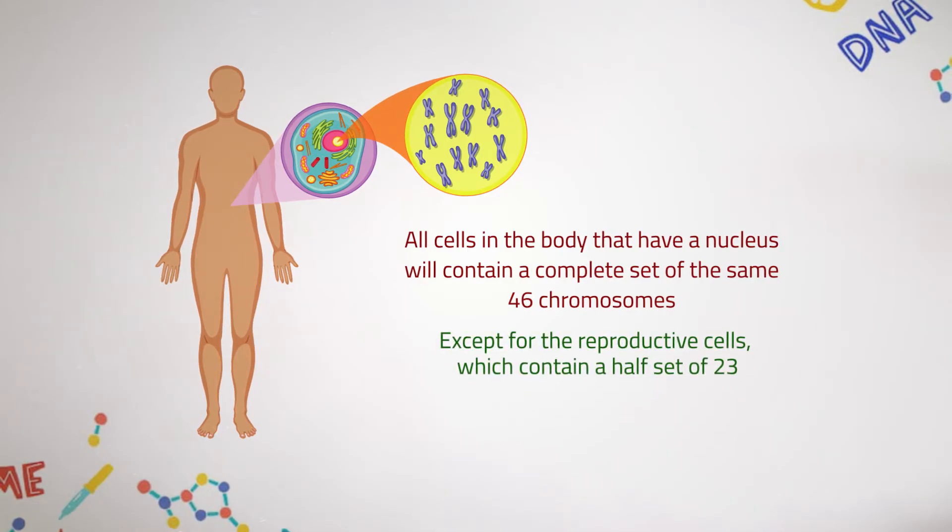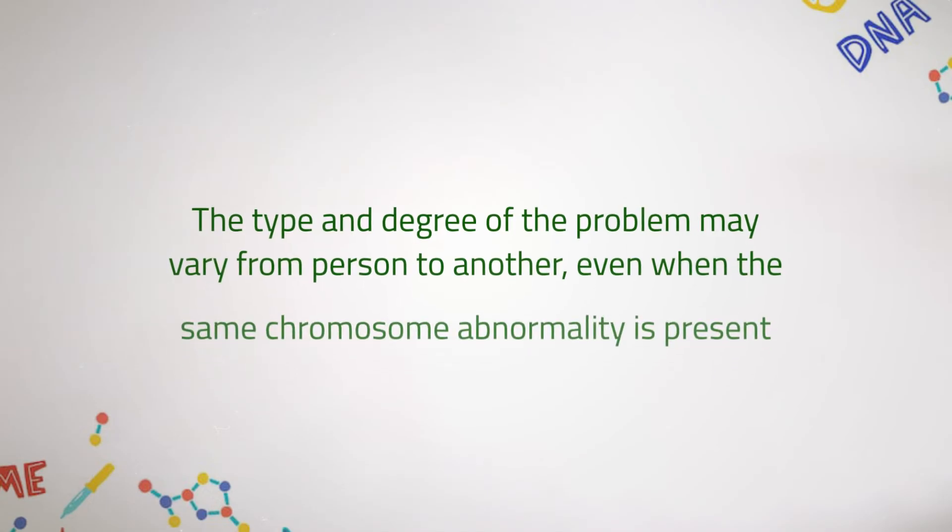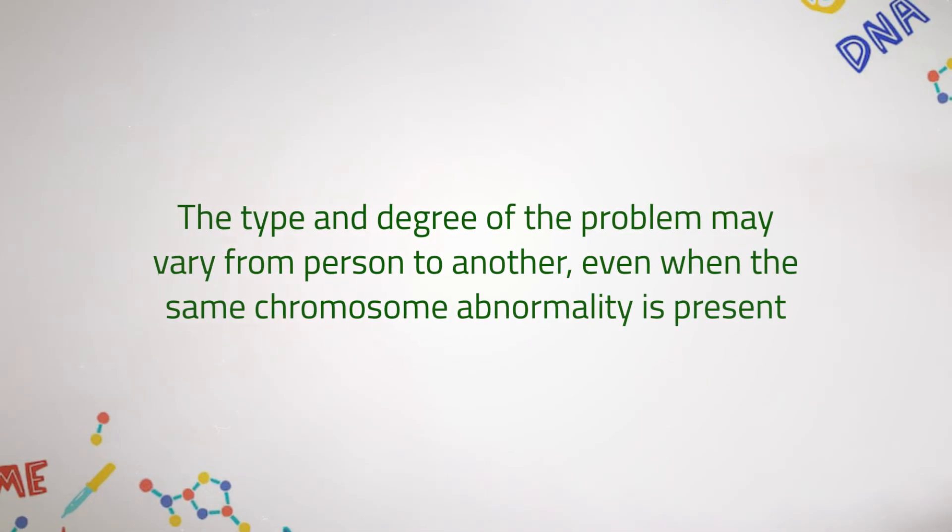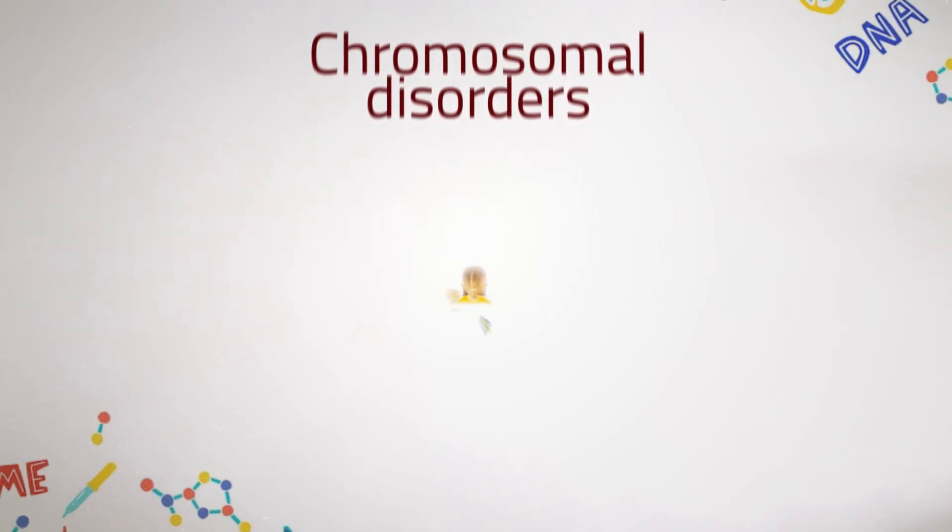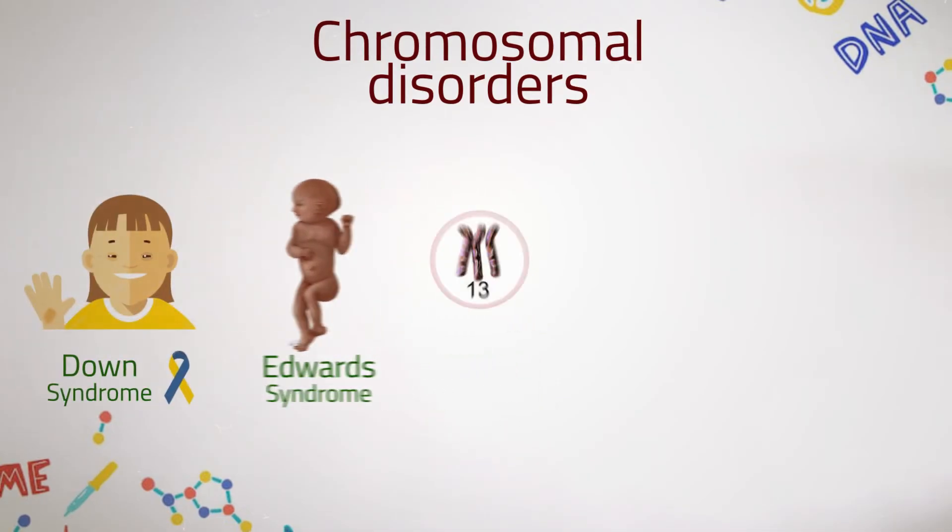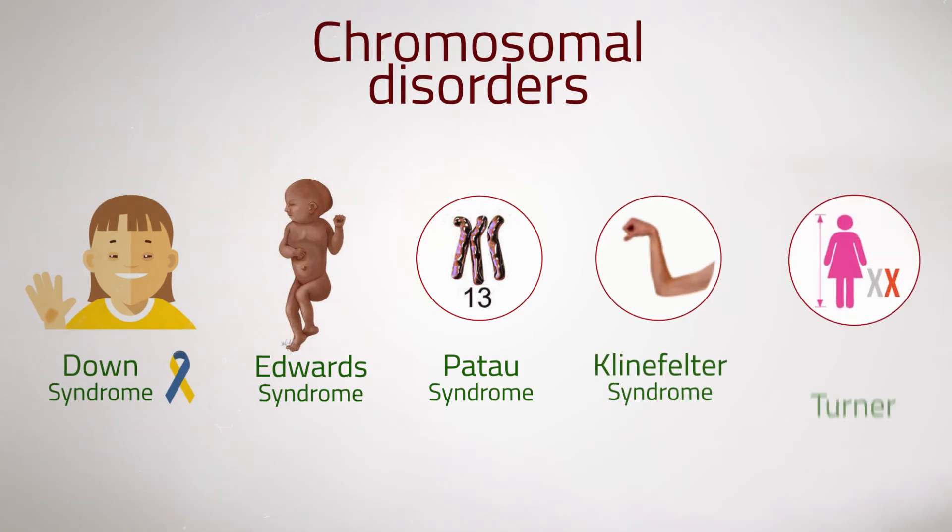The type and degree of the problem may vary from person to person, even when the same chromosome abnormality is present. Some chromosomal disorders that may be detected include Down syndrome, Edwards syndrome, Patau syndrome, Klinefelter syndrome, and Turner syndrome.